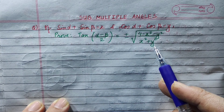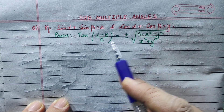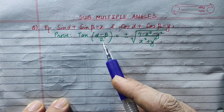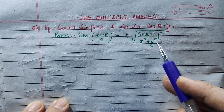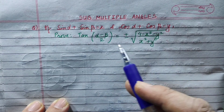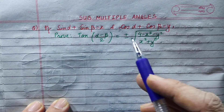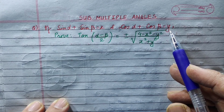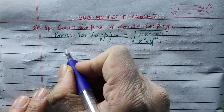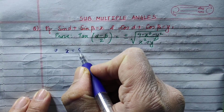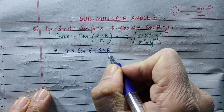Now, what do we do? We find the x square and y square values. We need to prove tan((alpha minus beta) by 2). This is LHS and RHS. We start by computing x square and y square values — beginning with x square equal to sin alpha plus sin beta, squared.